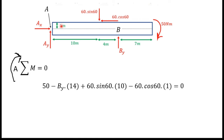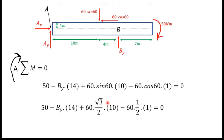Now I can simplify this equation. I write sine 60 as the square root of 3 over 2 and cos 60 as 1 over 2. Substituting these values and simplifying, I can get the answer for By: By equals 38.5 Newtons.